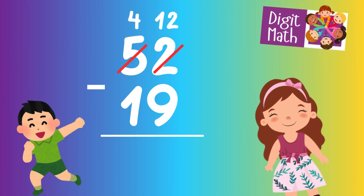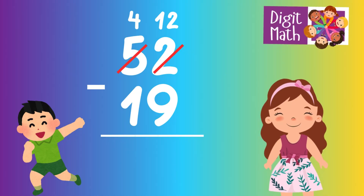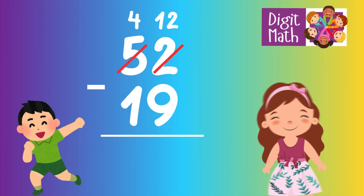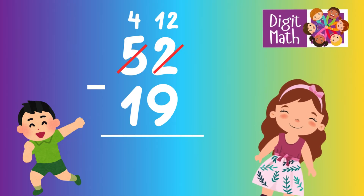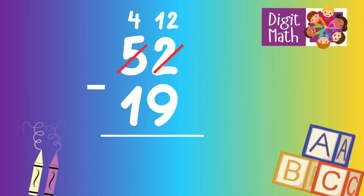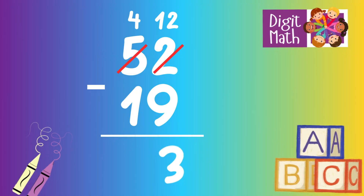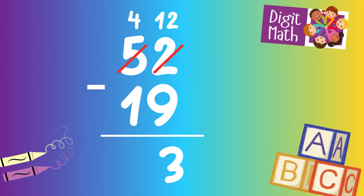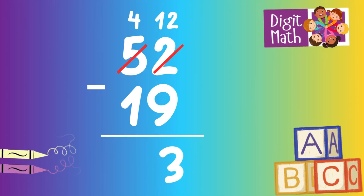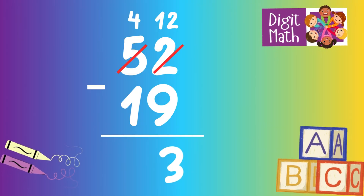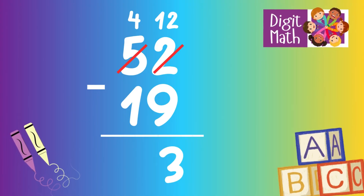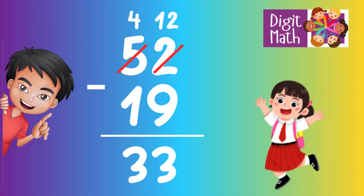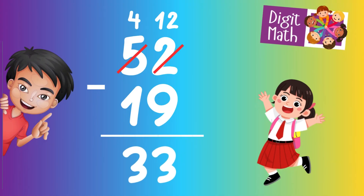Now we have 12 in the Units column. Subtract 9 from 12, which equals 3. In the Tens column, we now have 4. Subtract 1 from 4, which equals 3. So the final result is 52 minus 19 equals 33.